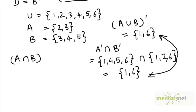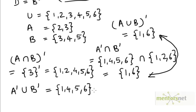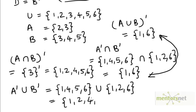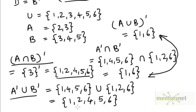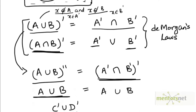Likewise, we could take A intersection B complement. A intersection B is just the singleton set {3}, and if you take the complement of that it would be everything other than 3: {1, 2, 4, 5, 6}. A complement union B complement: A complement is {1, 4, 5, 6} and B complement is {1, 2, 6}. If we take the union of these two sets, we get {1, 2, 4, 5, 6}. So this set equals the previous set — this was an illustrative example to verify De Morgan's laws.